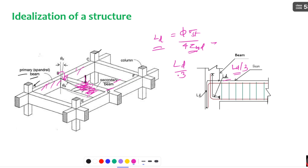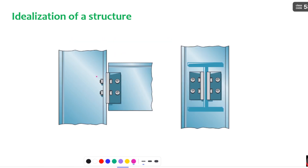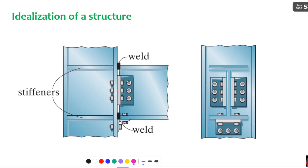Here you can see another example: both flange and web are connected — this is a moment connection. In another example, only the web is connected to the column so that only shear is transferred — this is a shear connection. In yet another case, both weld and web are connected to the column so that both moment and shear are transferred — so it is a moment connection.